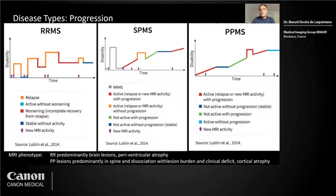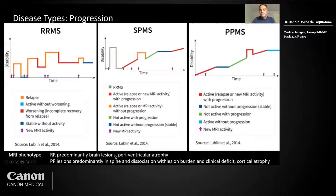On relapsing-remitting MS, brain lesions are predominant and atrophy is predominantly periventricular. On primary progressive, lesions are predominant in the spine, but there is a dissociation between the lesion burden and the clinical deficit. I will also focus on susceptibility-weighted imaging — it's a help for differential diagnosis — and I use EPI, FIBB, and FSBB sequences. The resolution is high, and I look for the central vein sign: one hypointense signal central on two orthogonal planes.